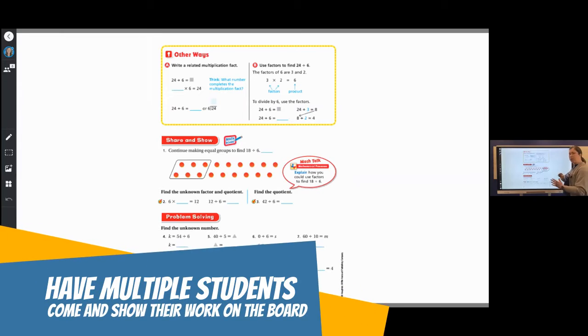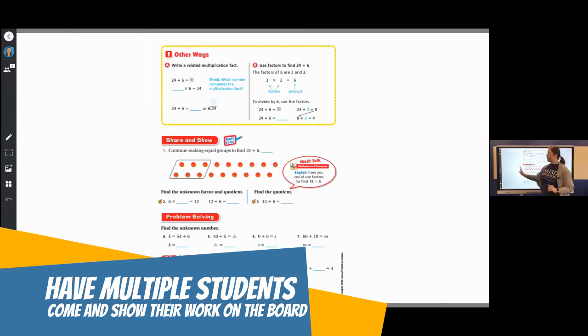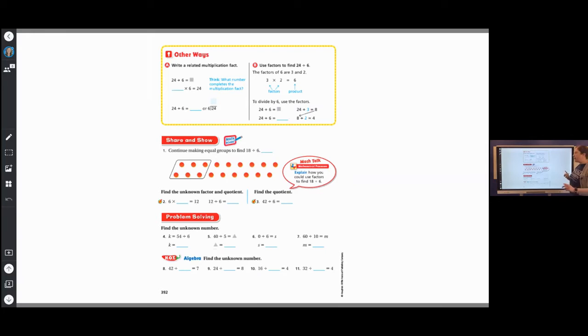I could even enable my finger inking and have a student come up on this side, and a student come up on this side, and each student can be showing the work of the problem. So when I'm using my marker tool, I could write out my problem, right? Six times blank equals 12, and solve with my students, and so on.